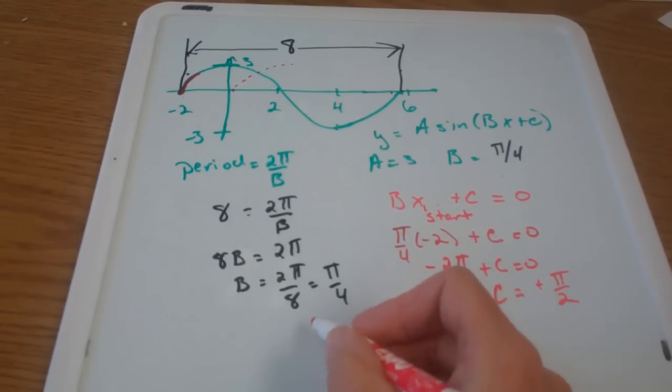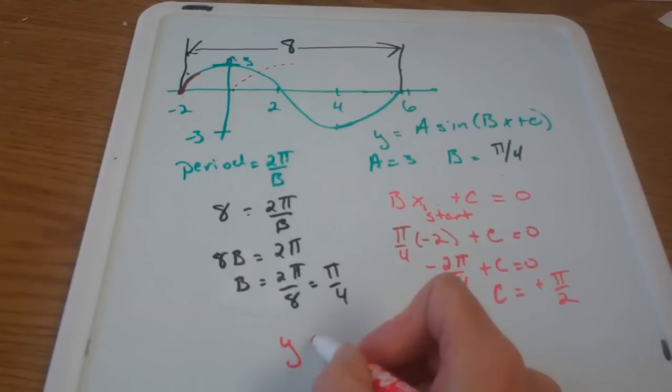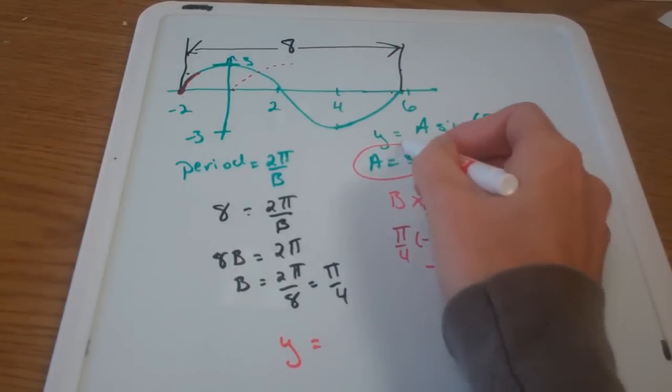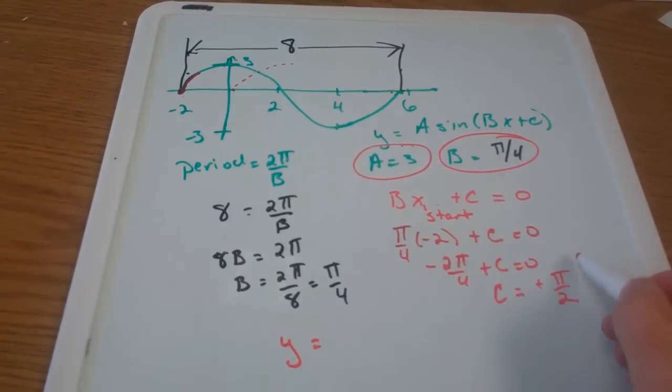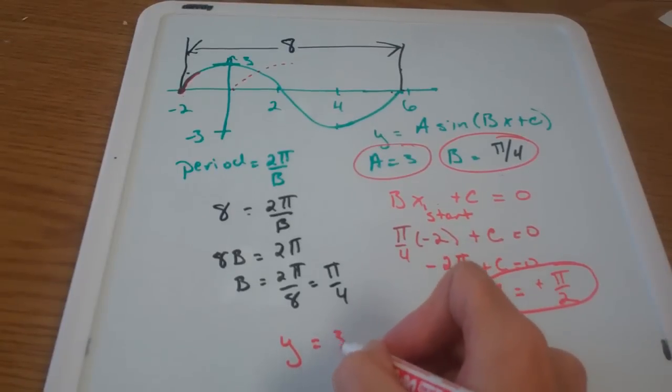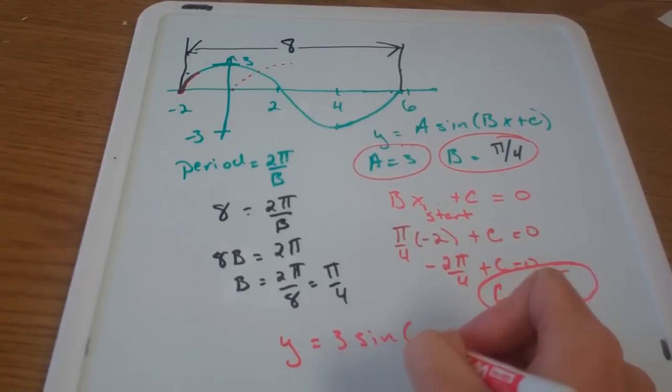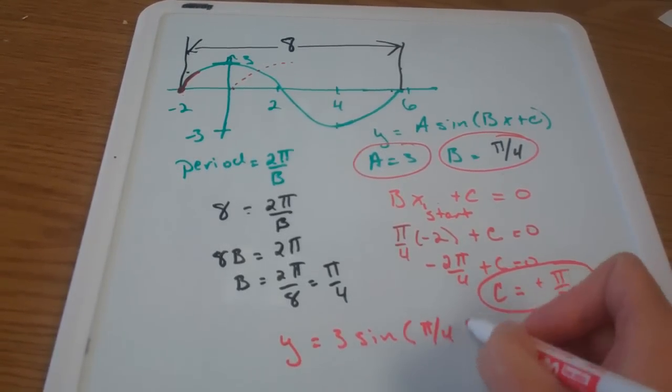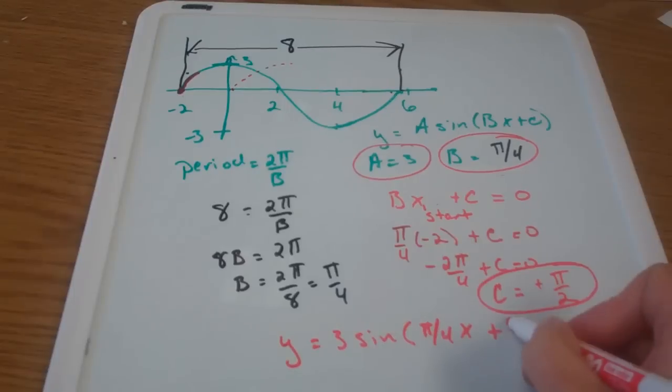So I think then I have my final answer here. I'm going to take all of these parts, put them all together and say y equals three sine π over four x plus π over two.